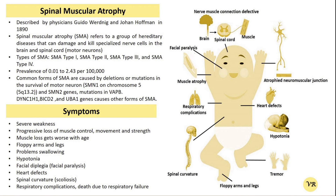In 1893, Hoffmann expanded on Werdnig's observations by describing additional cases of children with similar symptoms. His detailed clinical description and reports of family history helped establish the hereditary nature of the disease. Due to their contributions, the severe form is sometimes referred to as Werdnig-Hoffmann disease. SMA is a genetic disorder characterized by the progressive degeneration of motor neurons in the spinal cord and brain stem.